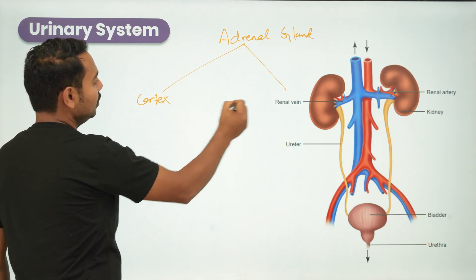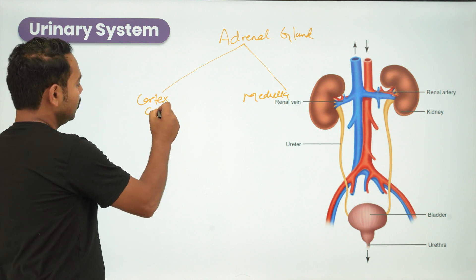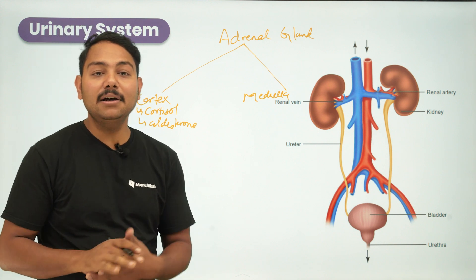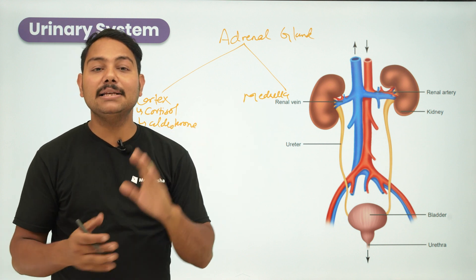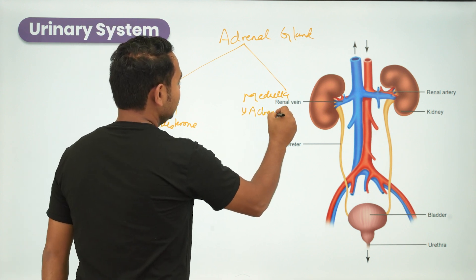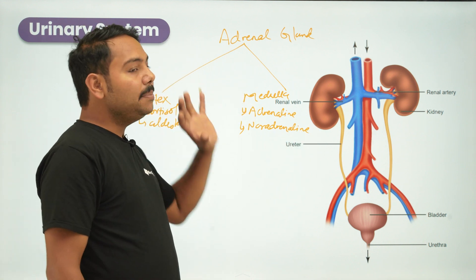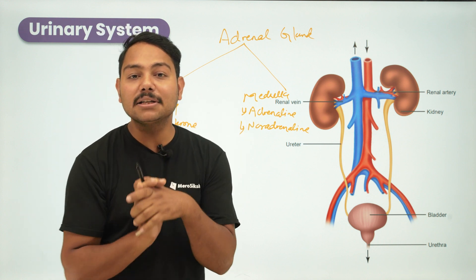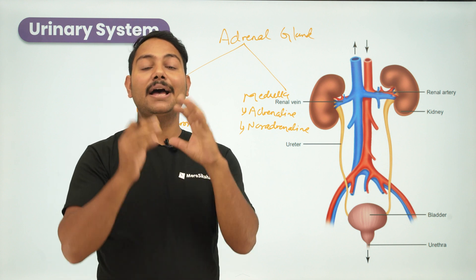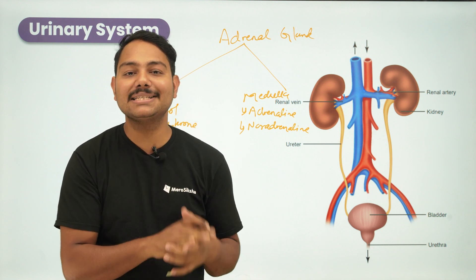The adrenal gland consists of a cortex and a medulla. The cortex secretes hormones, and the medulla produces adrenaline or noradrenaline. These hormones are essential to normal functioning in the body and control many important functions such as metabolism, blood sugar level, blood pressure, and salt and water balance.